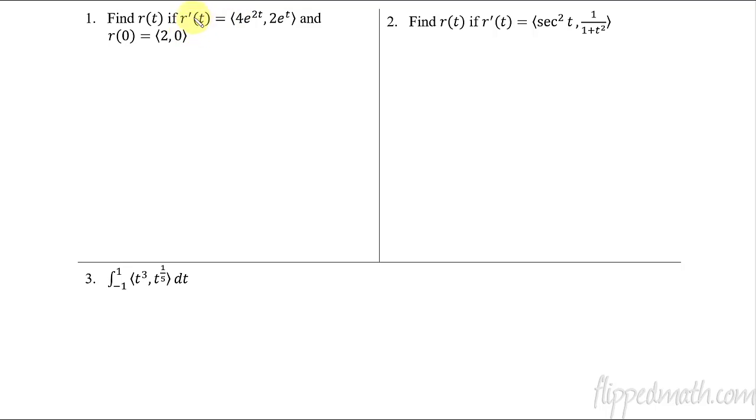So in this case, we're just going to take each component individually. If we have the derivative, then finding the anti-derivative will get us back to the original function. So we'll take the integral of 4e to the 2t with respect to t. And then over here, we'll take the integral of 2e to the t with respect to t. Now this is going to cause a little bit of a headache because you can see this chain rule thing going on here because of the 2t in the exponent, which means we need u substitution to do the integral.